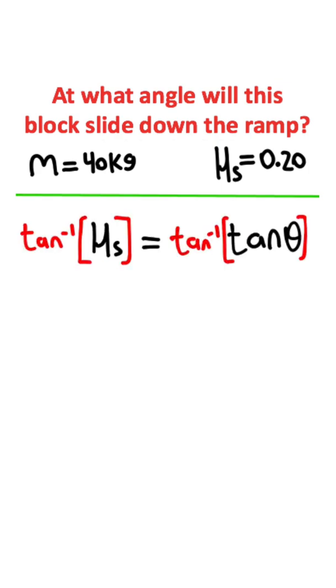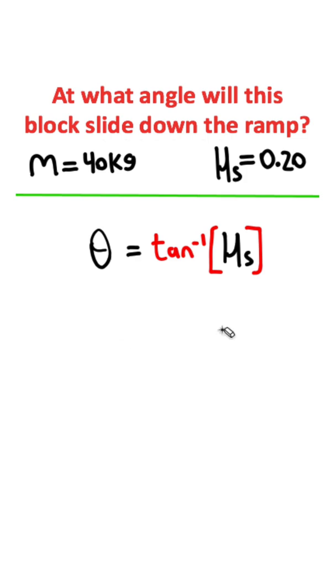Now if I take the inverse tangent of both sides, that'll get rid of the tangent on the right side, giving me that theta equals the inverse tangent of our coefficient of static friction. Notice we're independent of mass.